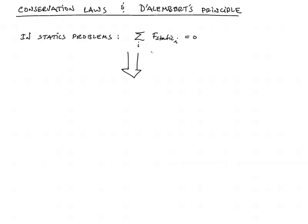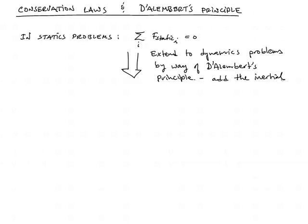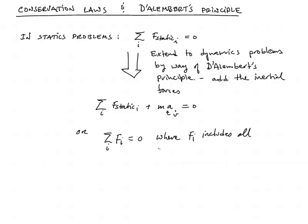We can extend that to solving actual dynamic problems where things are moving and velocities are changing in time. If we sum all of those static forces and in addition add the inertial forces and sum those to zero - ma or mv̇ - now we rewrite it as we did before: sum of all forces Fi = 0, but where Fi includes all inertial forces on the system. This is equivalent to KVL for circuits.